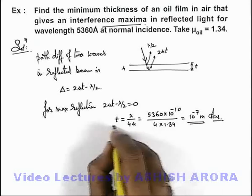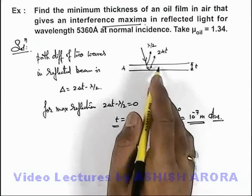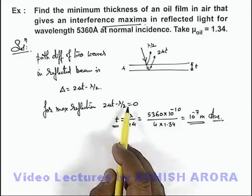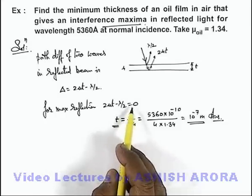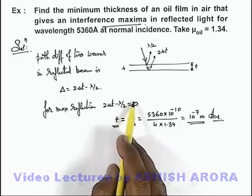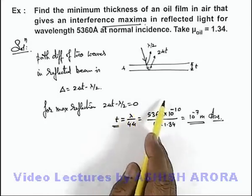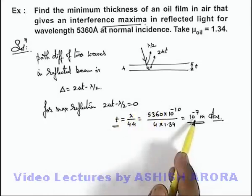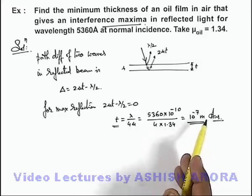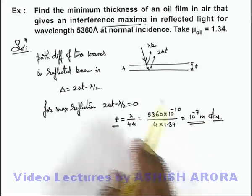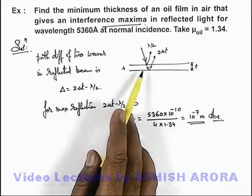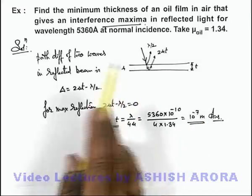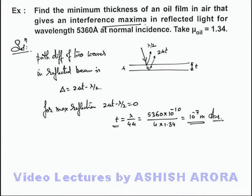This is the minimum thickness of the film which gives a maxima. If we had considered λ, 2λ, or 3λ, then correspondingly higher thicknesses would be obtained, for which also the interference maxima in reflected light for this wavelength will be seen.